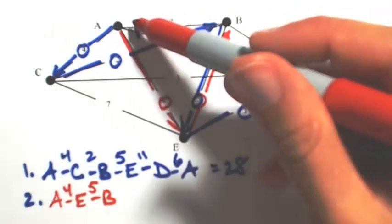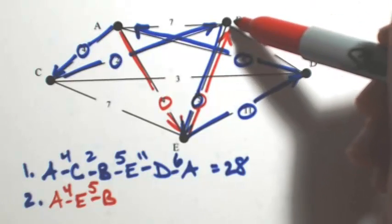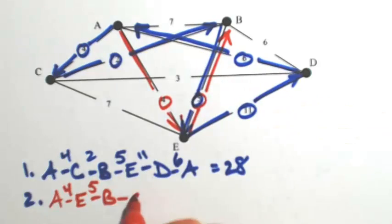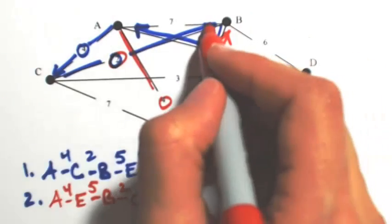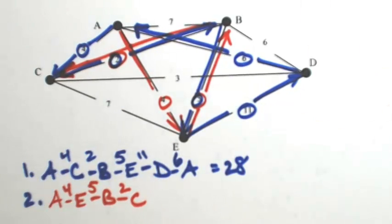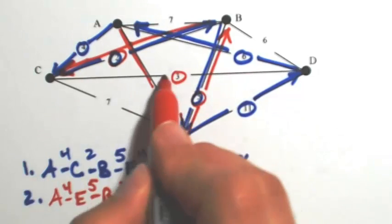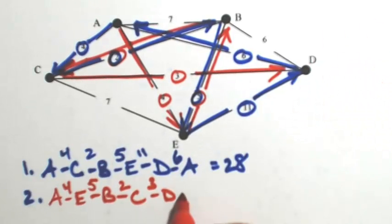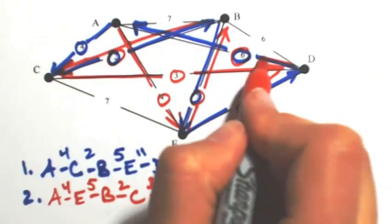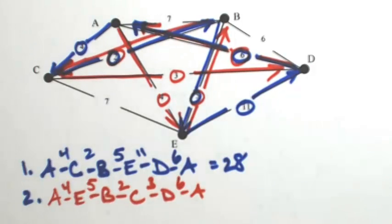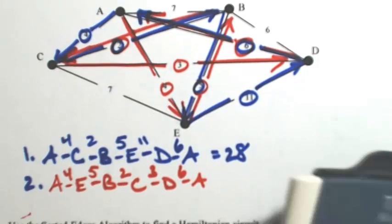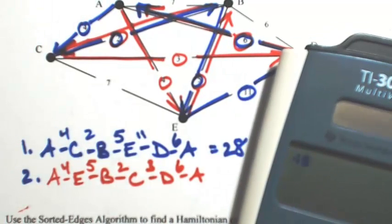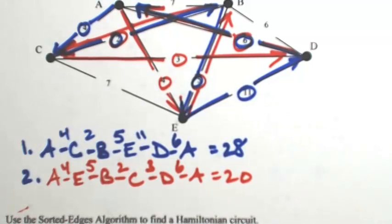From B, we don't want to go back to A because we haven't hit everything yet. From B, we can go to C which is 2, or D which is 6, so we go to C since it's cheaper. Then before going home, we have to hit D, so we go to D — that's a cost of 3. Now we've hit all vertices: A, B, C, D, and E, so we go back home. Adding up: 4 plus 5 plus 2 plus 3 plus 6 gives 20. This second possibility is cheaper, making it the optimal nearest neighbor Hamiltonian circuit.